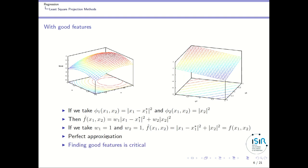Now imagine we are much more lucky and we take phi1 and phi2 to be more expressive features. Then our regression function is w1 times the first feature plus w2 times the second feature. If we take w1 = 1 and w2 = 1, the function is exactly the function we want to approximate, giving the perfect approximation. So having good features is critical — with the perfect features you can get the perfect approximation.